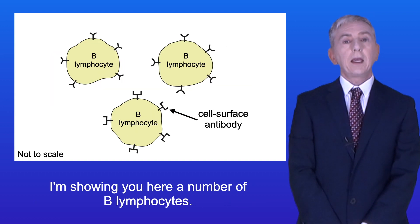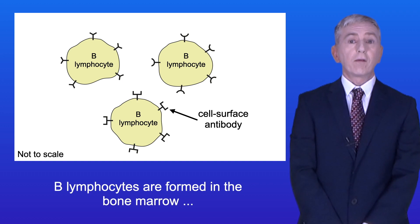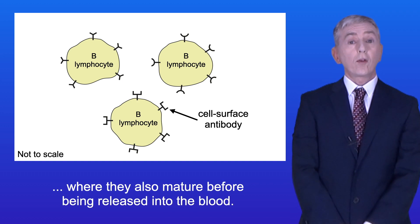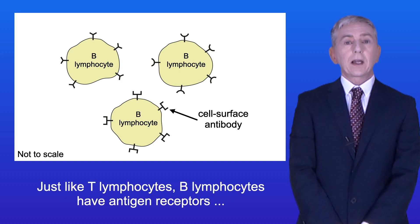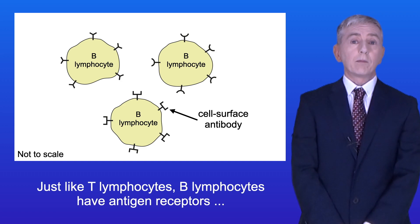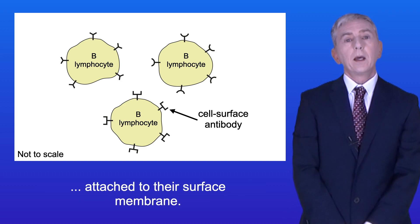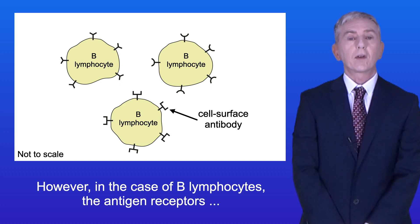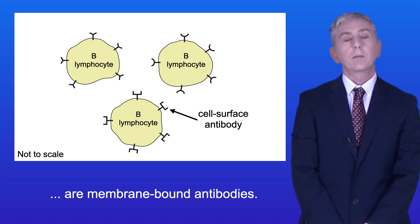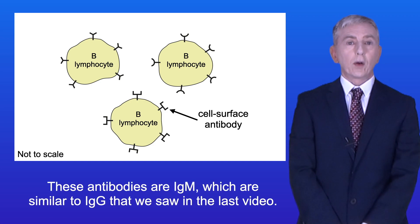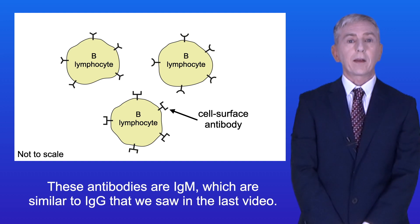B lymphocytes are formed in the bone marrow, where they also mature before being released into the blood. Just like T lymphocytes, B lymphocytes have antigen receptors attached to their surface membrane. However, in the case of B lymphocytes, the antigen receptors are membrane-bound antibodies. These antibodies are IgM, which are similar to IgG that we saw in the last video.